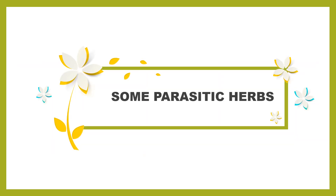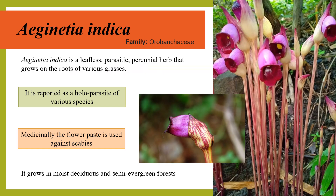Some parasitic herbs. Aeginetia indica is a leafless parasitic perennial herb that grows on the roots of various grasses. It is reported as a holoparasite of various species. Medicinally, the flower paste is used as a poultice. It grows in moist, shaded, and sunny evergreen forests.